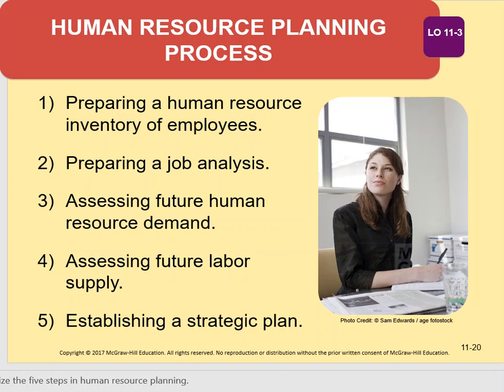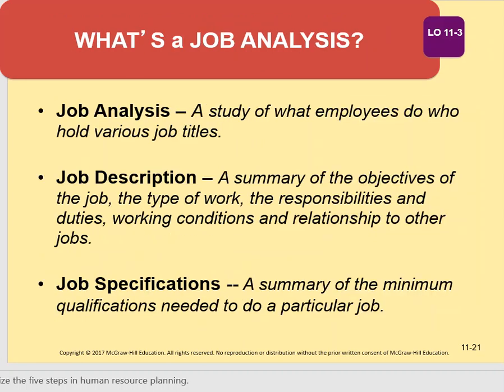Job analysis is simply a study of what employees do who hold various job titles. The result of a job analysis is two things: a job description, and job specifications. A job description is a summary of the objectives of the job, the type of work and responsibilities, duties, working conditions, and relationships to other jobs. Job specifications is a summary of the minimum qualifications needed to do a particular job — who can and who cannot do the job. If the job calls for a law degree, only people who have a law degree meet the specifications.